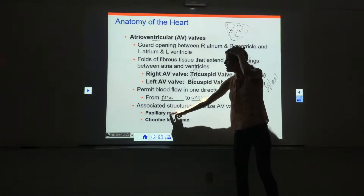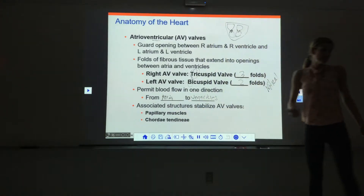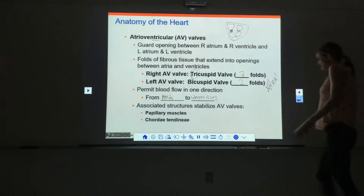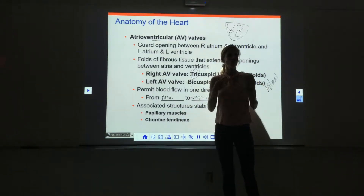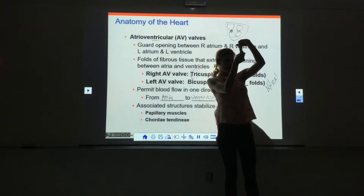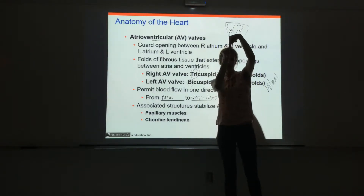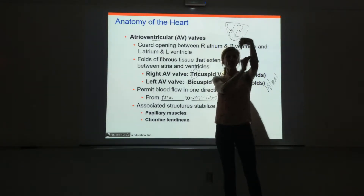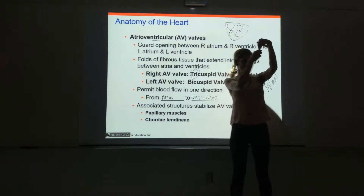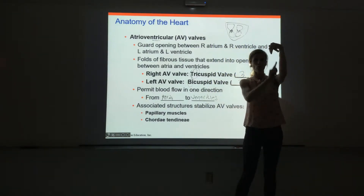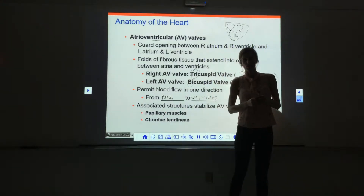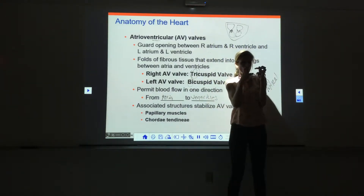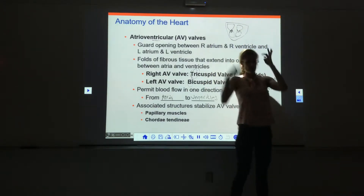The chordae tendinae literally means tendinous cord — it's like a rope that attaches onto the tissue and goes toward the heart wall. Right at the heart wall where the chordae tendinae attach, you'll see a bulge of muscle called a papillary muscle. That holds onto those cords and tenses hard so that the cords hold onto the tissue and it doesn't blow out the other direction.